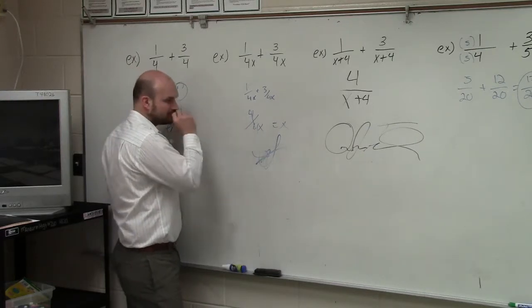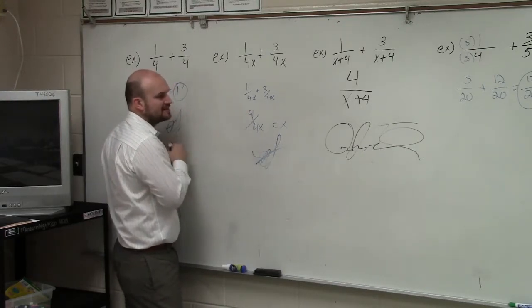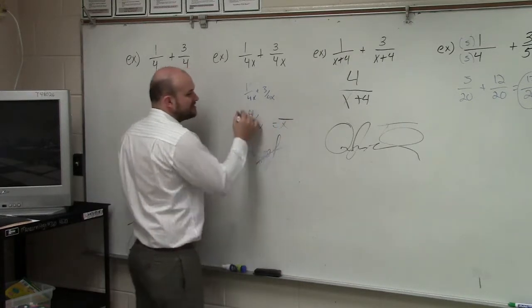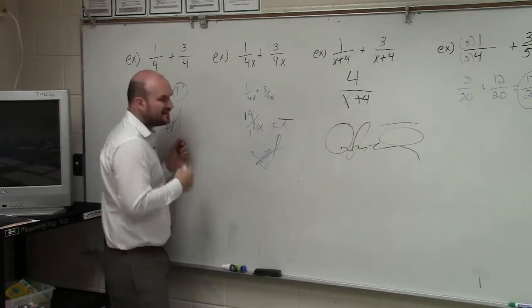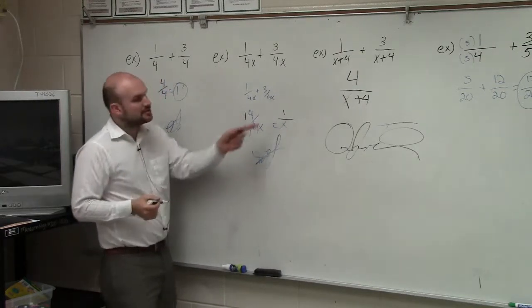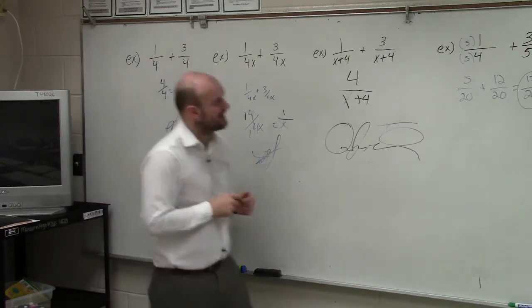Now, I like how they have the idea to simplify this. But remember, 4 divided by 4 reduces to 1 over 1. It doesn't cancel out, it goes to 1 over 1. So therefore, we still have a 1 up top. So the final answer is 1 over x.